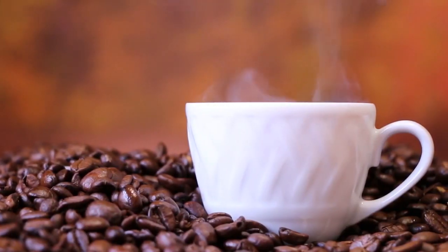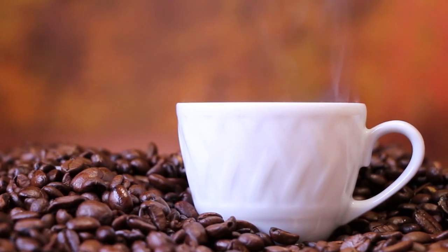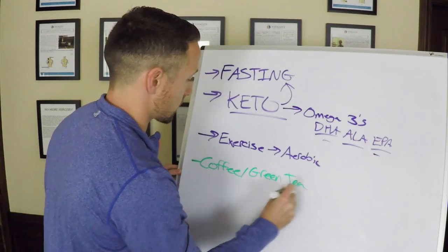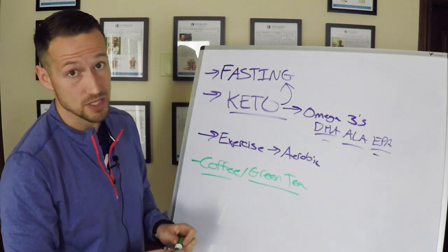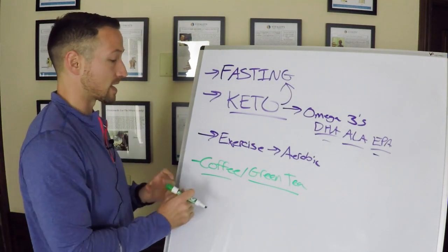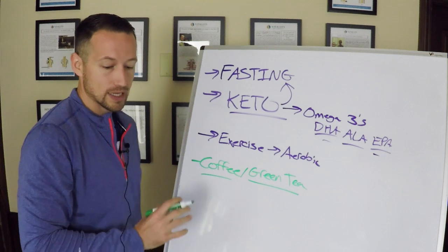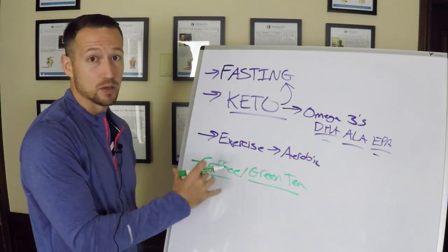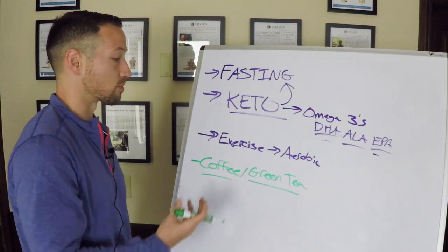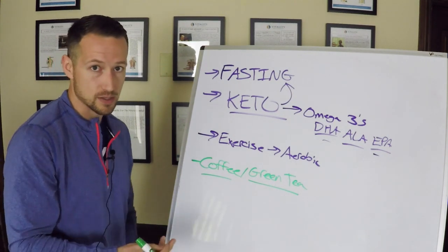Now both of these are very powerful stimulants of autophagy as well. Coffee is one of the best ones. The key thing here is you want to get good quality resources here. You want to get good quality coffee, organic. You also make sure that you're preserving the oils of the coffee. So this is when you're going to want to use something like a French press.